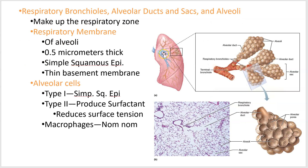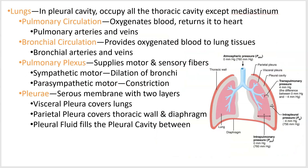Now for the gross anatomy of the lungs. There are two different circulations going to them. The pulmonary circulation, which we learned about in heart and blood vessels, is where deoxygenated blood goes to the lungs to get oxygenated and return to the heart. Bronchial circulation is different — the lungs are made of tissue that needs oxygen, so bronchial arteries branch off the thoracic aorta to provide the lungs with their own oxygen supply as part of the systemic circulation.